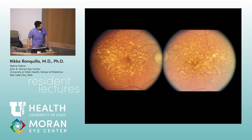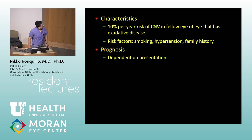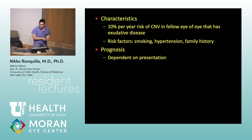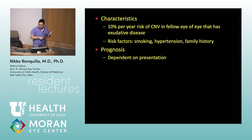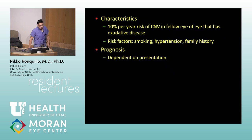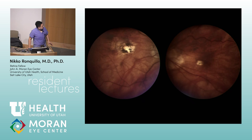Next — drusen, macular degeneration. Risk factors: smoking, hypertension, family history, female sex. AREDS 2 vitamins: vitamin C, vitamin E, lutein, zeaxanthin, and zinc. AREDS 1 had beta-carotene, which increases lung cancer risk — that's why it's no longer used. CNV types: classic (type 2), occult (type 1), and type 3 (retinal angiomatous proliferation).